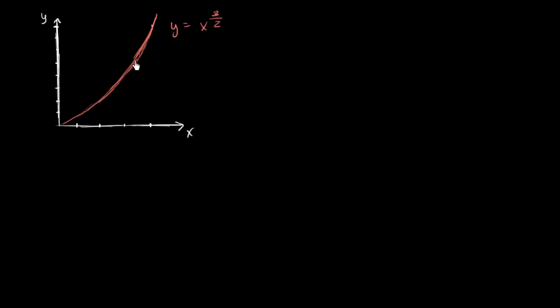So right over here we have the graph of the function y equals x to the three halves power. And what I want to do is find the arc length of this curve from when x equals zero to when x equals, and I'm going to pick a strange number here, and I picked the strange number because it makes the numbers work out very well, to x equals 32 over nine. 32 over nine is three and five ninths.